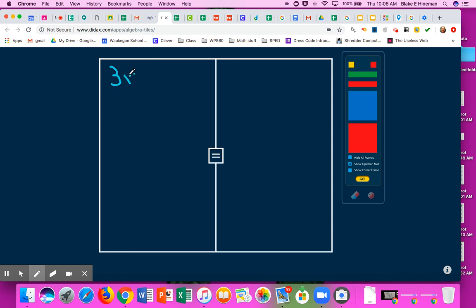3x plus 2. And then this line, this half here is the equal sign. So 3x plus 2 equals 4x plus 4. And I'm going to show you with the manipulatives here how we would go ahead and model that.